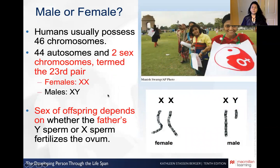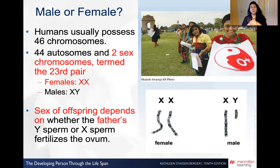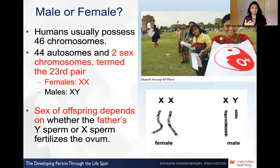So males and females: humans typically have 46 chromosomes. We have 44 that we call the autosomes, and two that we call the sex chromosomes. At the 23rd pair, those two chromosomes are called the sex chromosomes because whether they are X or Y determines whether the baby is male or female. At the 23rd pair, a female would have two X's, while a male is formed when we have an X and a Y.